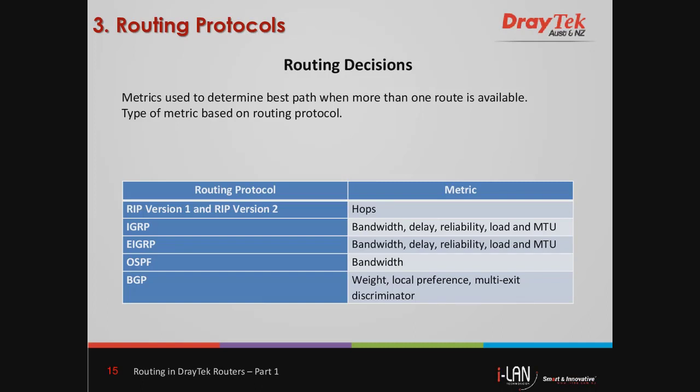Routing decisions are made by using metrics to calculate the best path for a data packet to take. Each routing protocol uses different metrics. For example, RIP uses the number of hops, or how many networks it must cross to reach the final destination, as a metric. Other protocols may use network bandwidth, delay, reliability, load, or MTU in making their routing decisions.